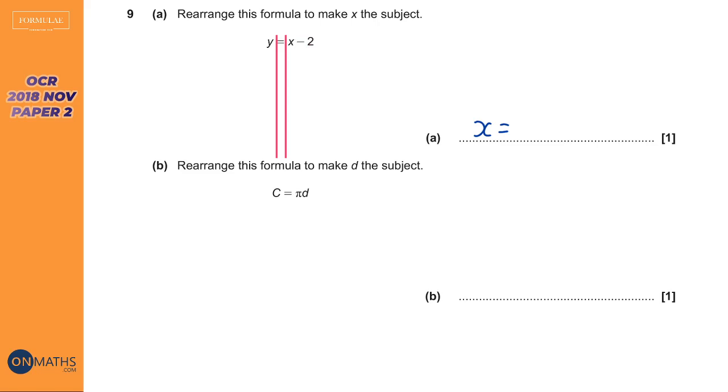Well the inverse or opposite of take away 2 is plus 2. So we're going to plus 2 both sides. And so on the left hand side we've now got y plus 2, because y plus 2 is y plus 2, and on the right side here we have x.